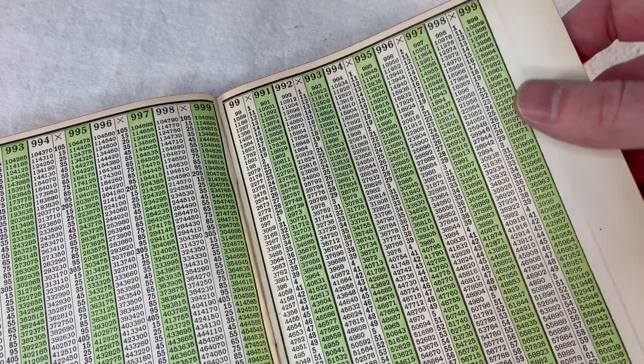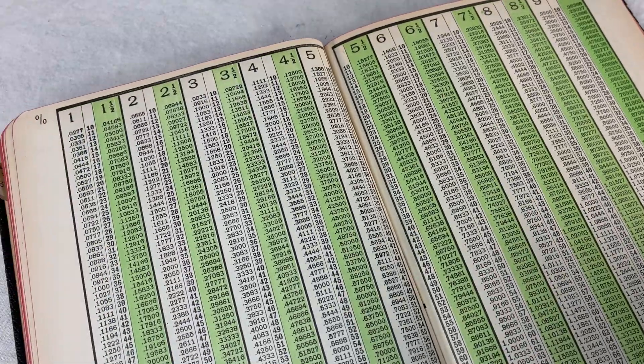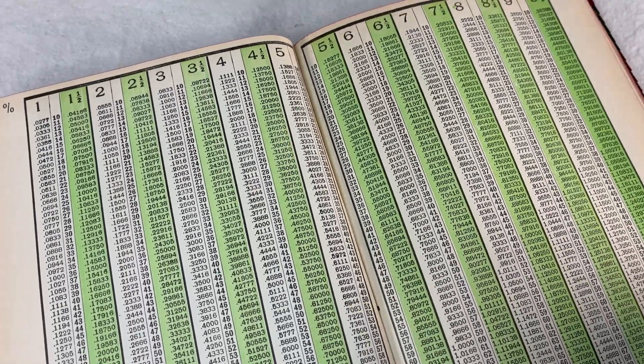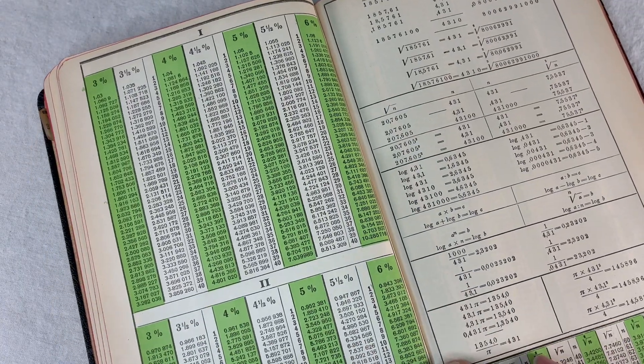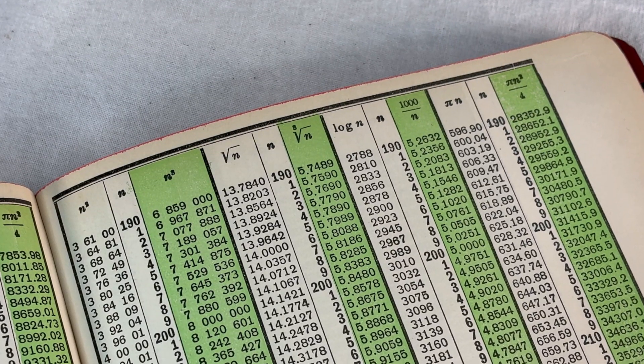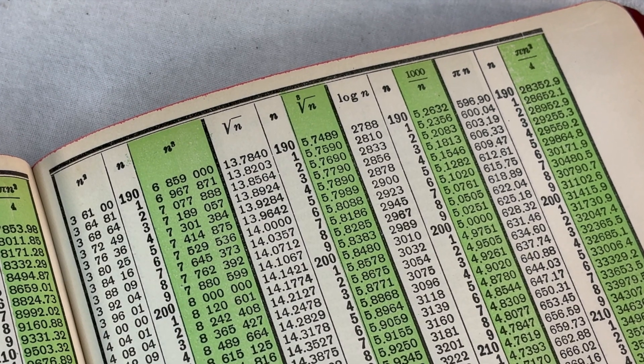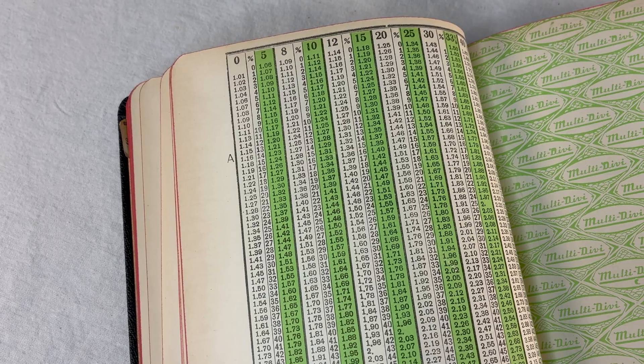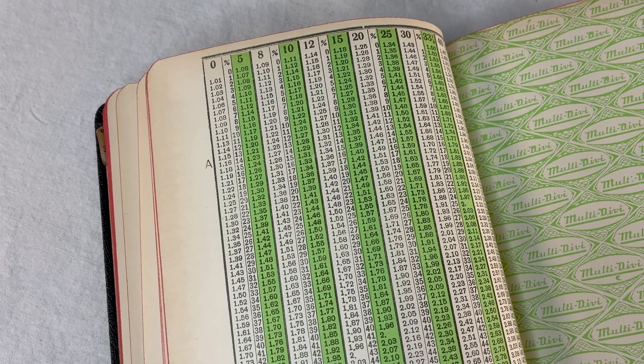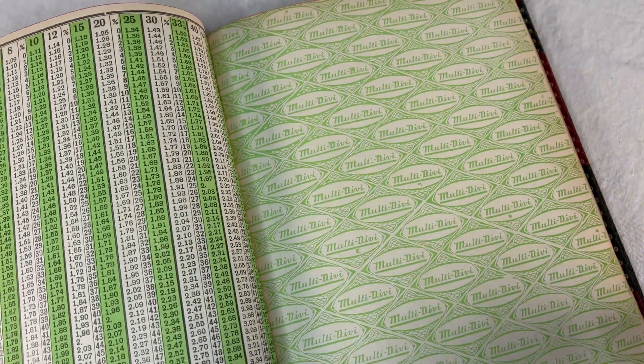There are a few bells and whistles at the end here. After the page with 999, you get 3 different tables for doing compound interest and amortizations. We got squares, cubes, square roots, cube roots, logs, reciprocals, circumference and areas of circles. Some more percentage stuff. These are all cute, but come on, these are pretty standard in any old book of tables. And it looks like that's it.